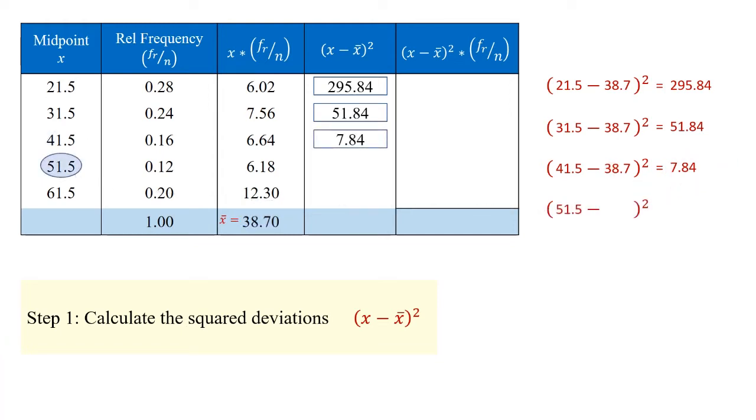The fourth group, midpoint value of 51.5, subtract 38.7, we square this deviation, and it gives us a total of 163.84.